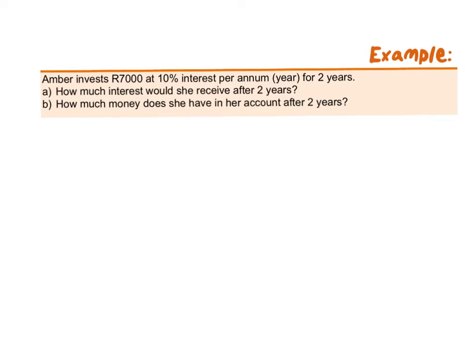Normally you will get a question that looks like this, and there'll be two different types of questions we can ask from this example. If Amber invests 7,000 rand at 10% interest per annum — which means per year — for two years, we can either ask how much interest does she get, or how much money does she have after the two year period. And if you understand percentages, this is actually rather simple. If she gets 10% on 7,000 rand, you should know that that is 700 rand.